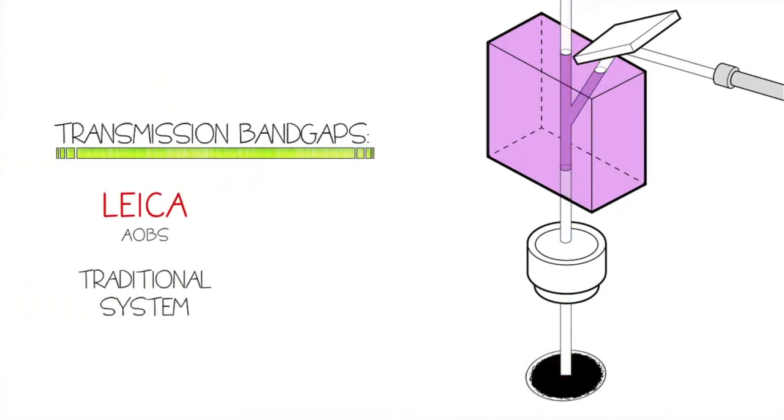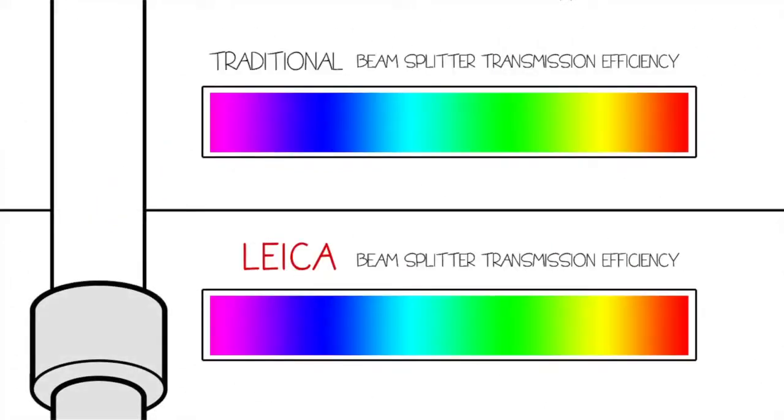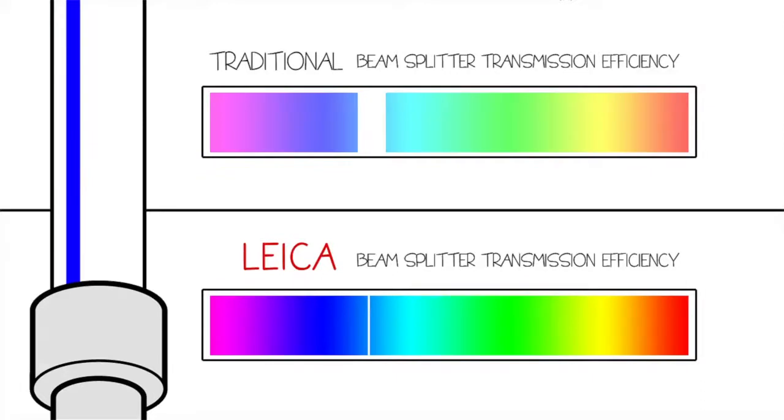The AOBS also has a transmission band gap around the excitation line of 2 to 6 nanometers, while the dichroics produce band gaps that range from 20 to 80 nanometers. The short band gap of the AOBS allows sample emission to be collected closer to the excitation line for maximum collection efficiency.